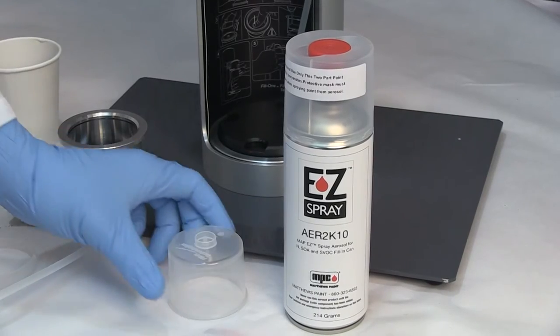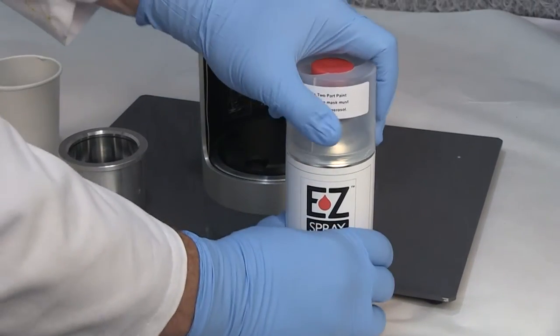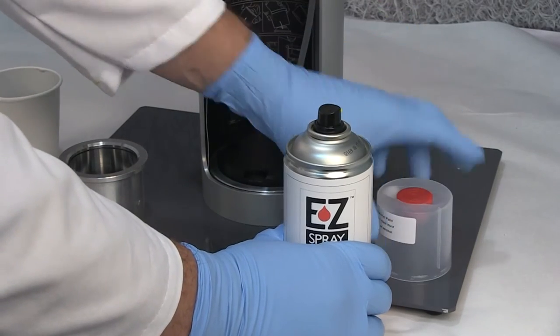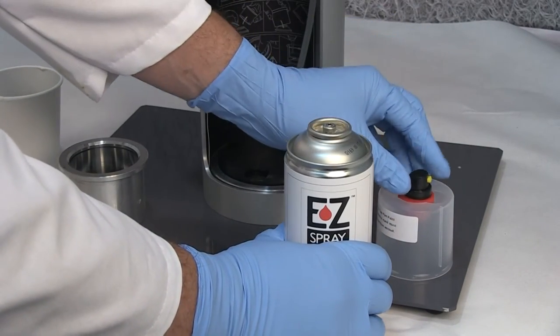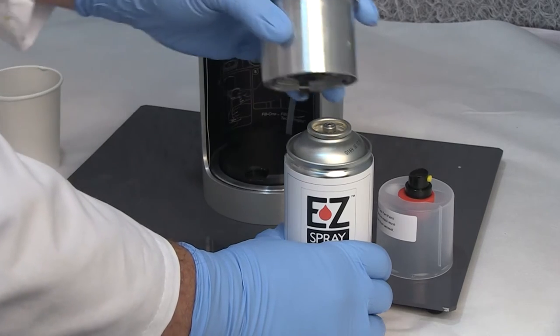Next, remove the cap with the red plunger from the top of the aerosol can. Facing the spray nozzle away from you, carefully lift the nozzle upwards to remove.